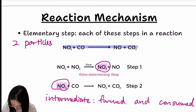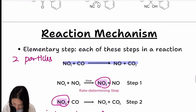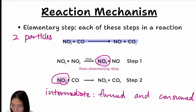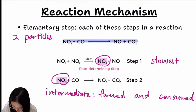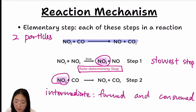Some elementary steps are fast, some are slow. We pick the slowest elementary step and call it the rate-determining step. Like in baking: if the first three steps take 5 minutes each and baking takes 40 minutes, the last step determines how long the whole process takes. The rate-determining step is especially important because we use it to write the rate law.